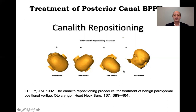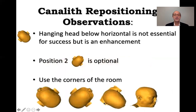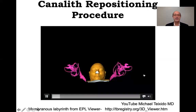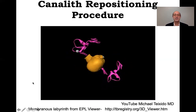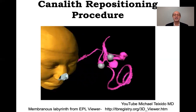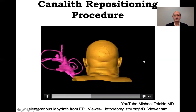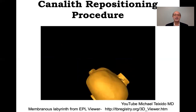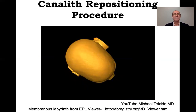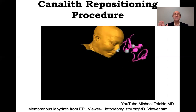Here's our model for left posterior canalolithiasis: head to the left, then to the right, head to the lower corner, and then upright — and there is the otolith back in the utricle where dark cells can dissolve them. Head nose to the left, nose to the upper right, nose to the lower right, and then upright. The head is tipped forward in the final position because the common crus is tipped backward, and this brings the common crus vertical to empty it more effectively.